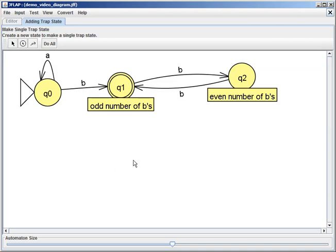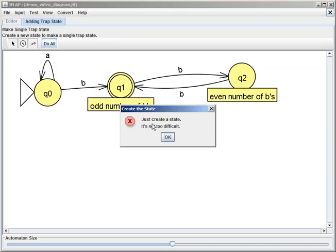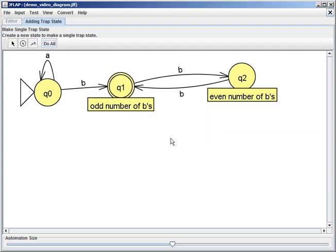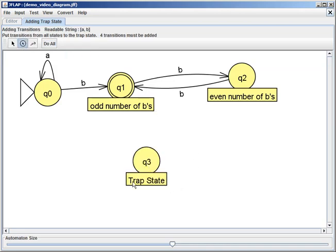If you just click on 'do all' without doing it, it pops up a little window that says 'just create a state, it's not too difficult.' So I'll say okay, I'm going to click on the state creator tool and I will make a new state down here, and it automatically labels it trap state.